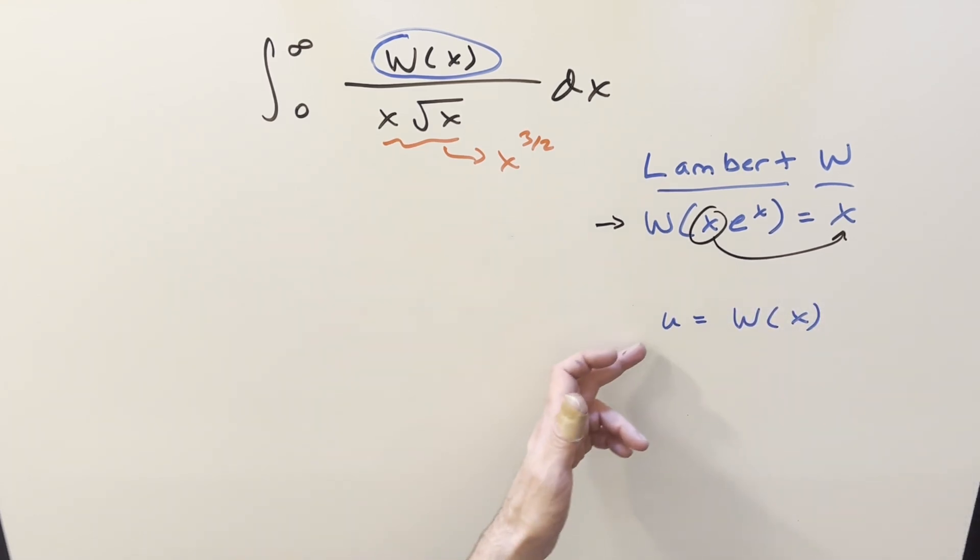If I set u equal to Lambert W of x, and then from here we could just differentiate and get our du value. I did the derivative of Lambert W in a previous video, but what I want to do instead is if we solve for x, then this is actually going to be easier to differentiate. So solving for x on this, we have x equal to u e to the u.